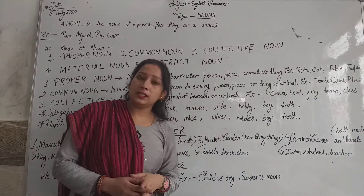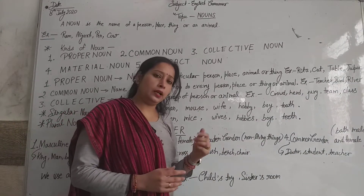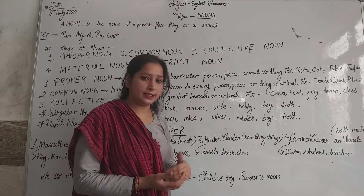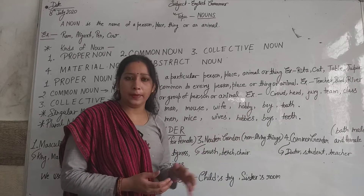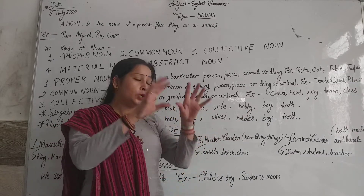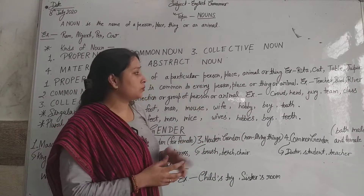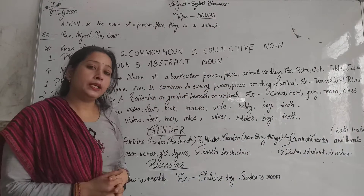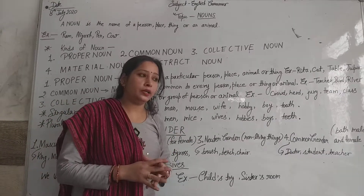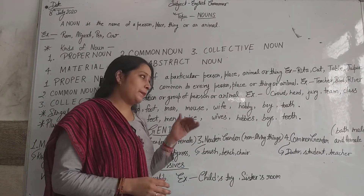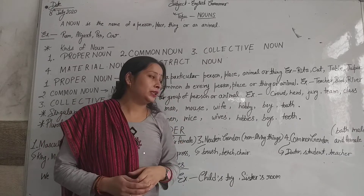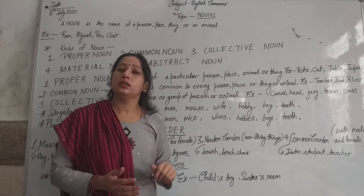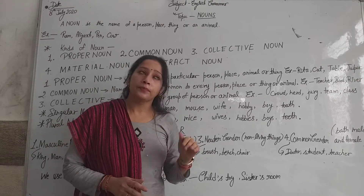For example, 'bird' — we know all kinds of birds: parrot, eagle, sparrow, etc. They all have different names, but we call the whole category 'bird.' Similarly, 'river' is a common noun, but individually we call them Ganga, Yamuna, Saraswati, Godavari — all different names.